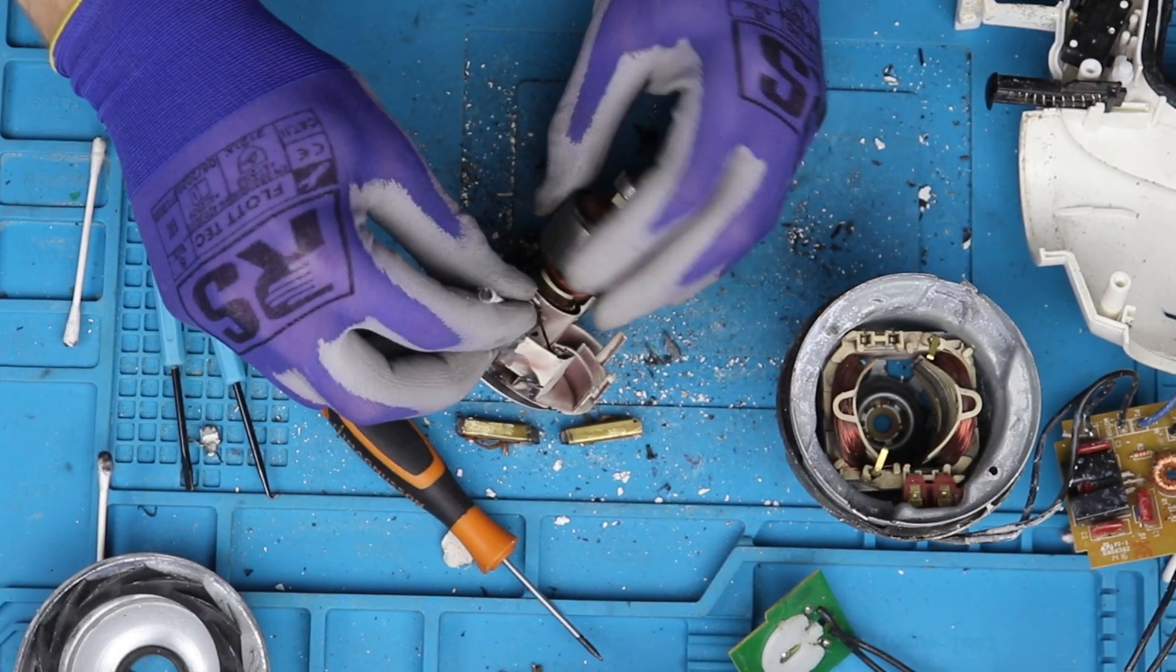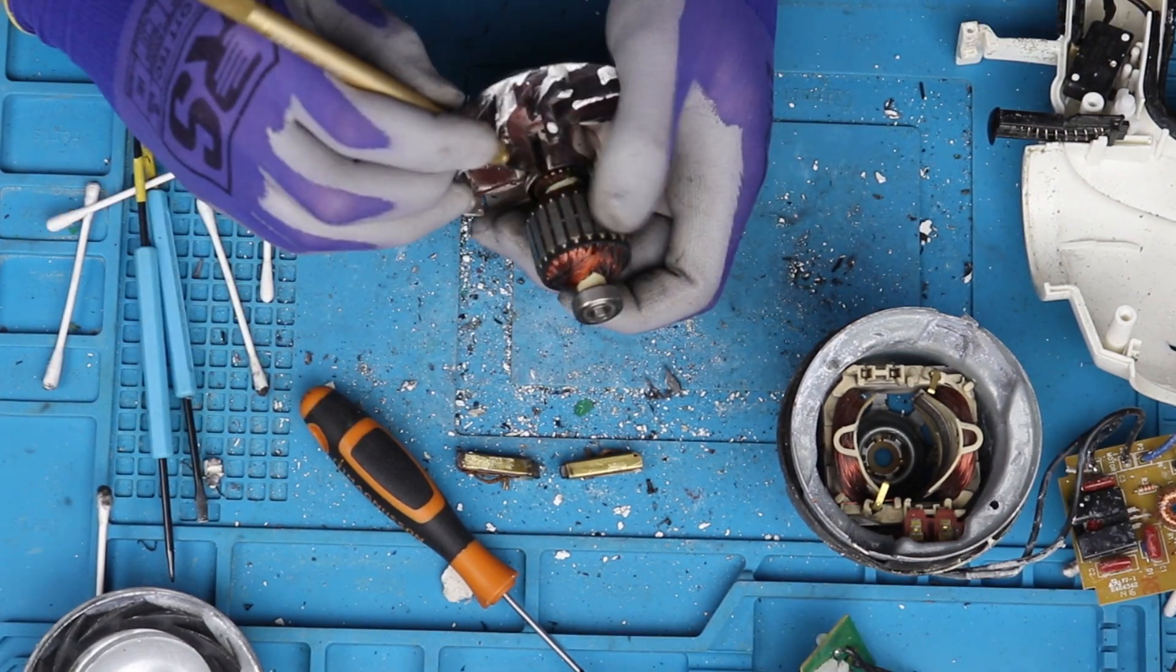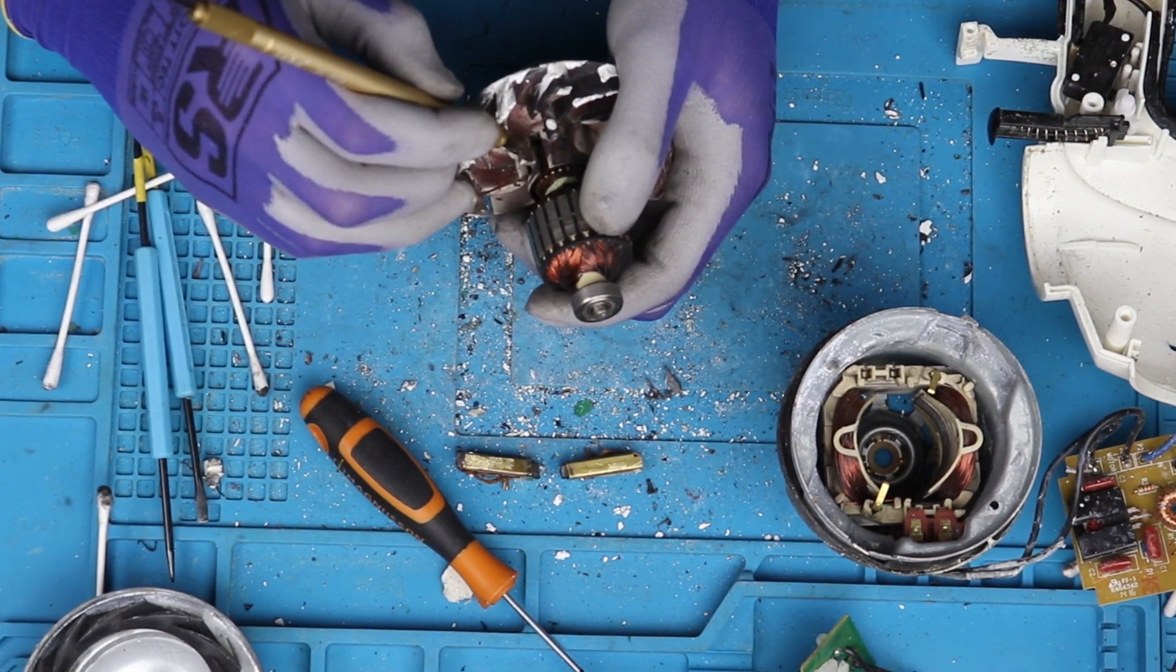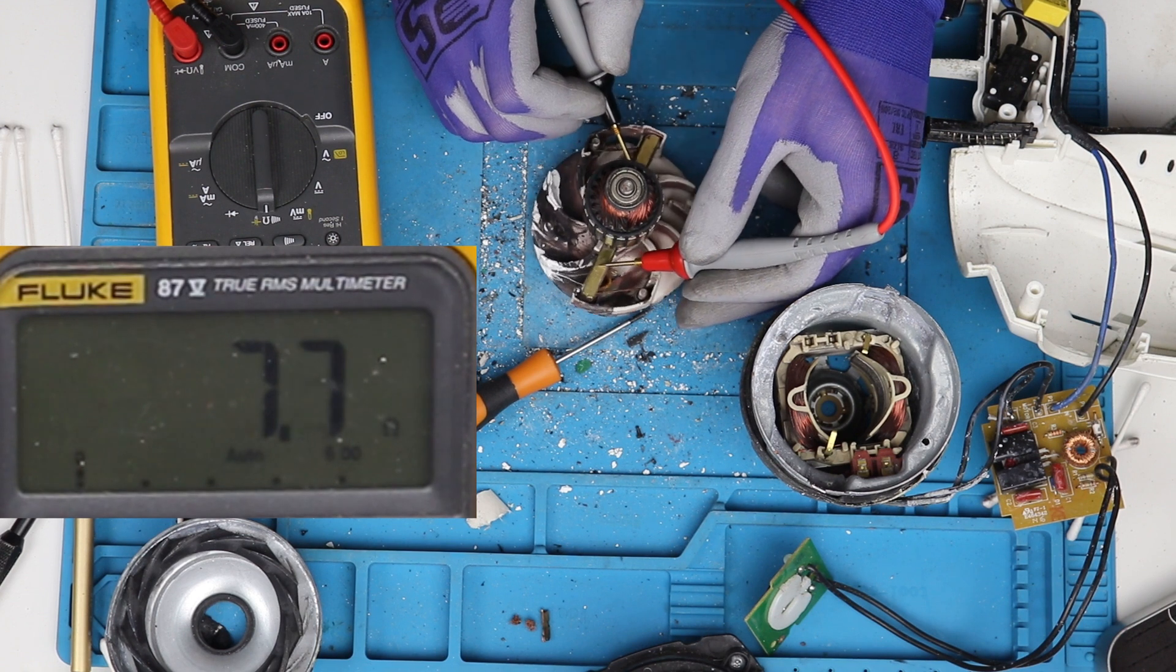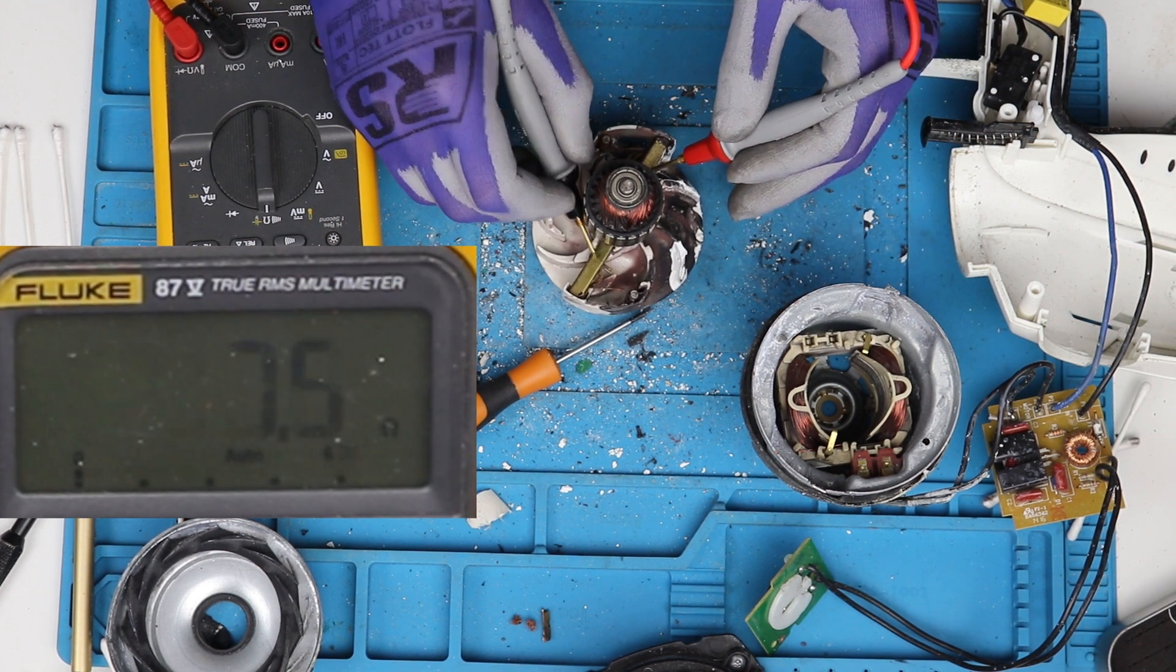I also use some IPA to clean the contact points and use a scraper to remove any gunk from between them. If we repeat the test now, you can see that we actually get a stable reading.